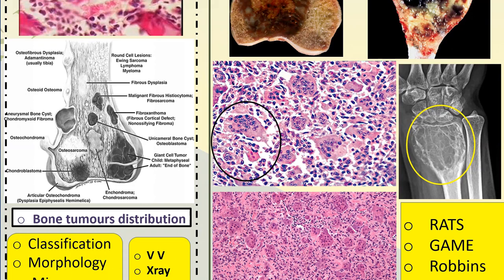This diagram shows the epiphysis, diaphysis, and metaphysis. In the metaphysis, tumors like Ewing sarcoma occur. In the diaphysis, osteosarcoma can be found. The giant cell tumor occurs at the epiphysis. Other tumors that can have giant cells include aneurysmal bone cyst.